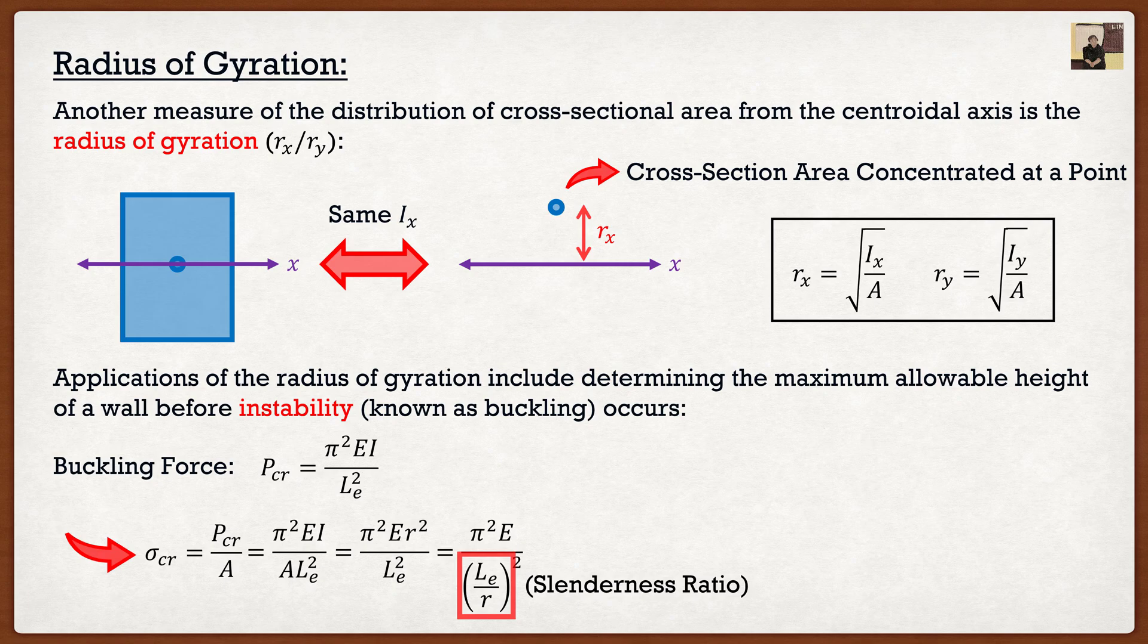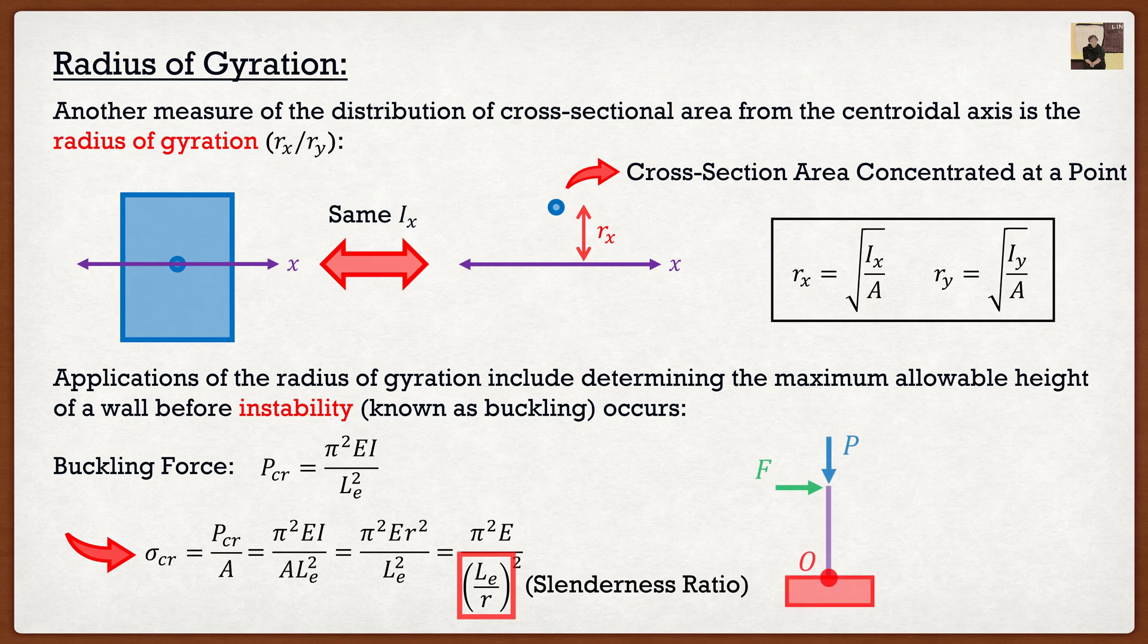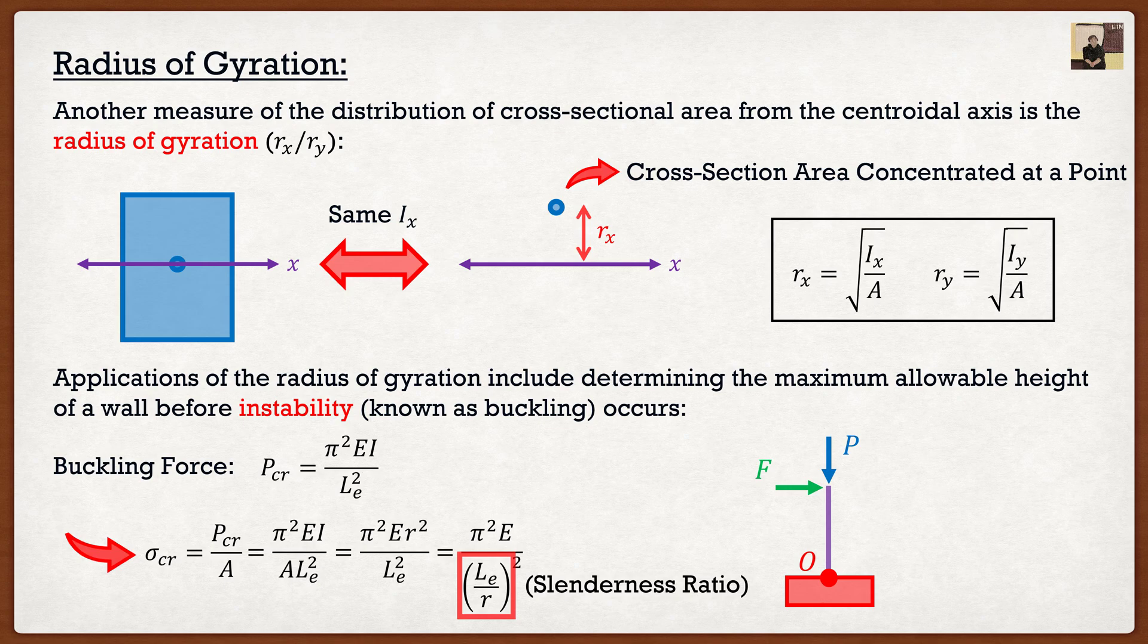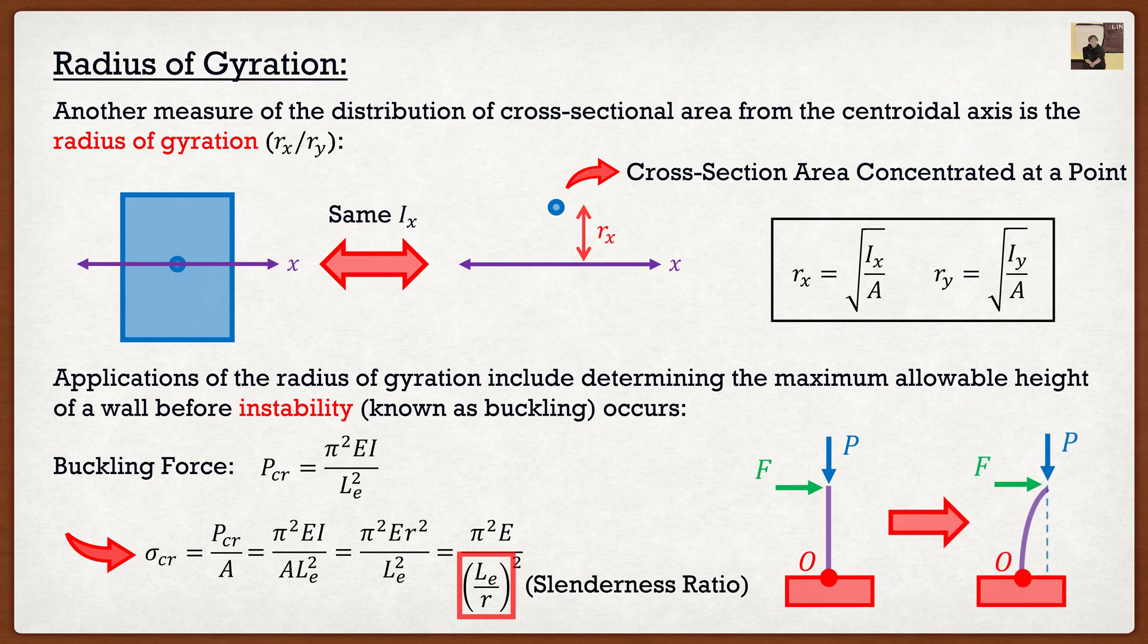One of the things that we talked about earlier was the idea of second order effects. We said that if we were to have a wall or something that had basically a lateral load, as well as an axial load, we don't actually have any moment produced by that point load P. But we said if we consider deformation, and the wall starts to bend, well now that point load P is actually going to create a moment about O.